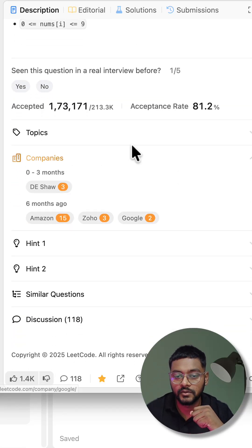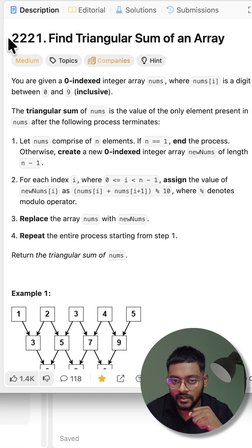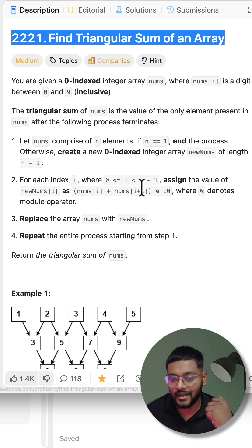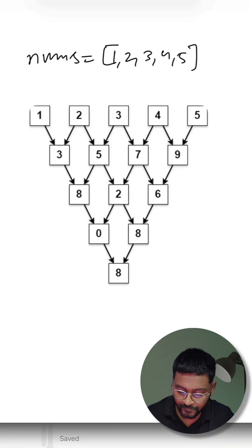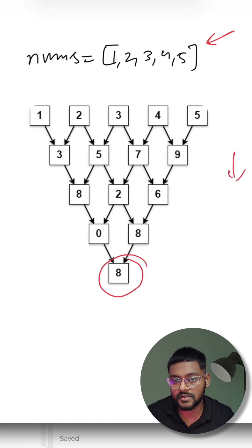Asked in FAANG companies like Amazon and Google in coding interviews: find the triangular sum of an array. The problem statement says we'll be given an integer array like [1, 2, 3, 4, 5] and we have to perform an operation as shown in this table, and in the end return a single integer.